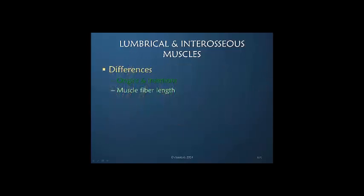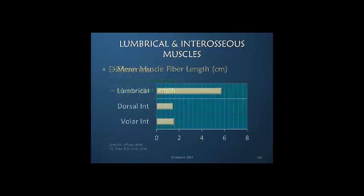Muscle fiber length — look at the difference. There's a very slight difference between dorsal and volar interosseous muscles, but the lumbrical muscle is significantly longer, more than three times in its fiber length. That's because it has much greater excursion.